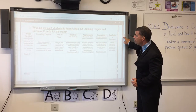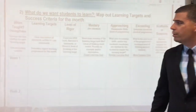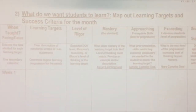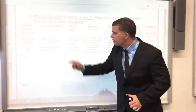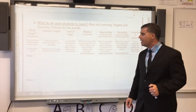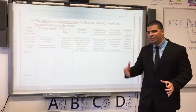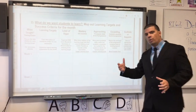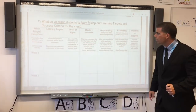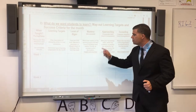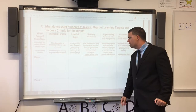The next thing we do is determine what we want students to learn. We map out the learnings, targets, and success criteria for the month, making sure we have enough time to teach everything. We break down the learning targets — standards to targets — with clear descriptions written in I-CAN statements. We look at the level of rigor: are we matching and teaching with the rigor of the standard in mind? Mastery of the standard means the level of thinking must match the challenging level of rigor on the standard, and we provide an example and/or a description.